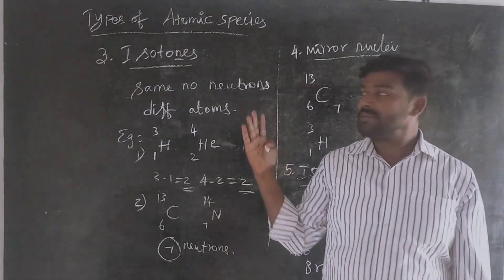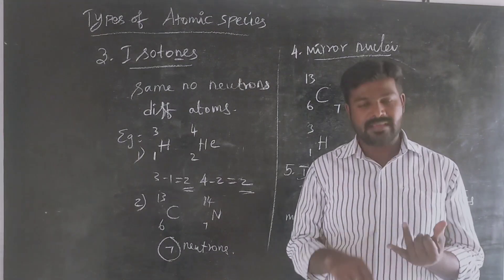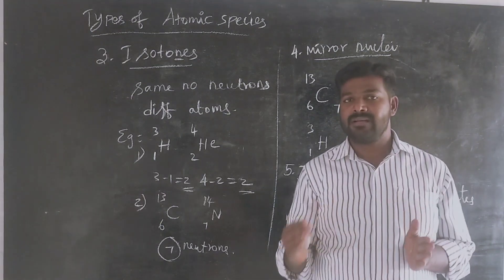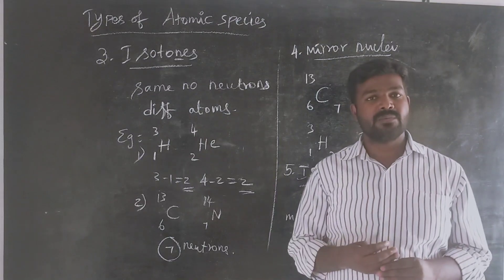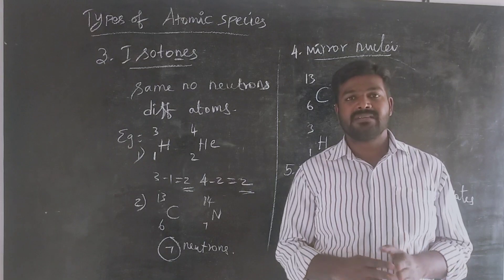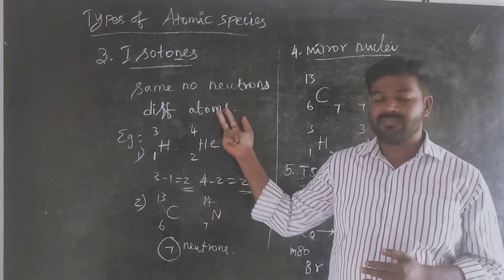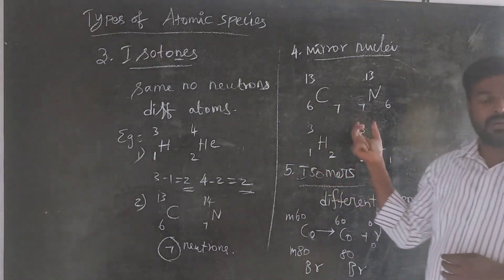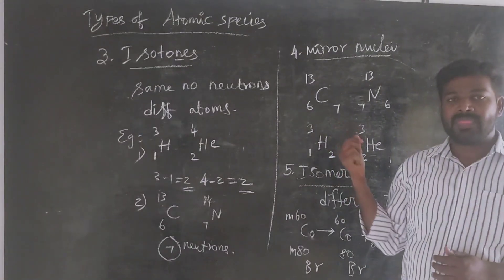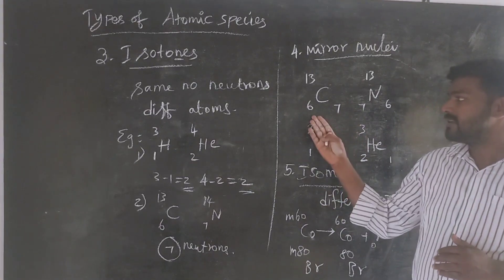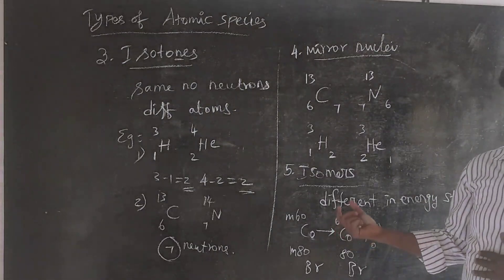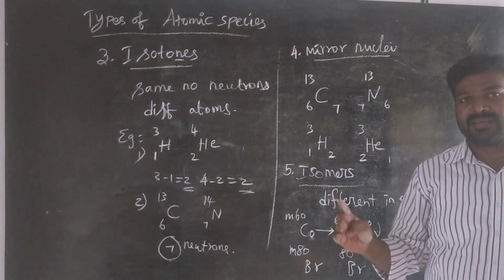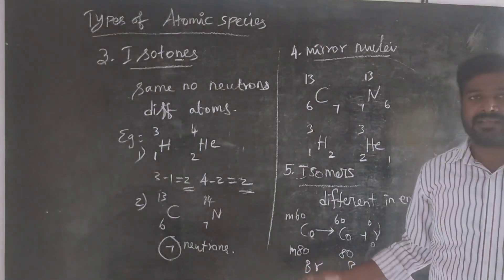In summary, the types of atomic species are: isotopes (same atomic number, different mass number), isobars (same mass number, different atomic number), isotones (same number of neutrons, different elements), mirror nuclei, and isomers (same nucleus — same atomic number and mass number — but different energy states). Thank you.